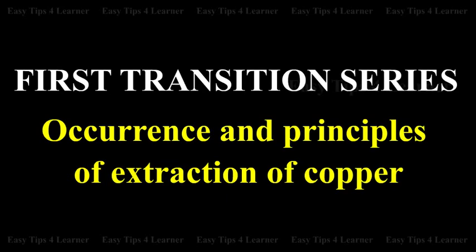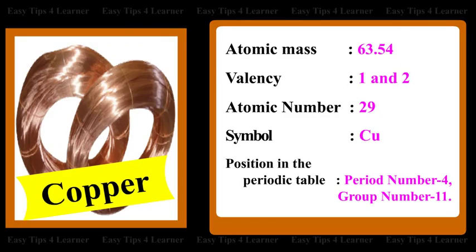First Transition Series: Occurrence and Principles of Extraction of Copper. Atomic Mass: 63.54. Valency: 1 and 2. Atomic Number: 29. Symbol: Cu. Position in the Periodic Table — Period No. 4, Group No. 11.